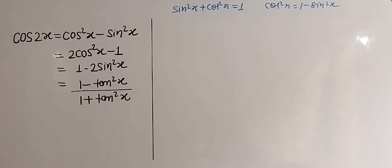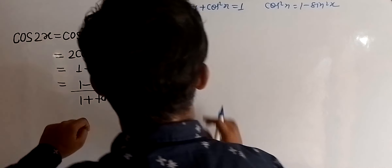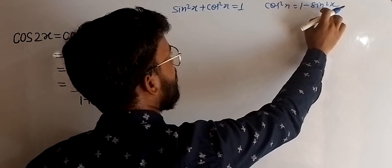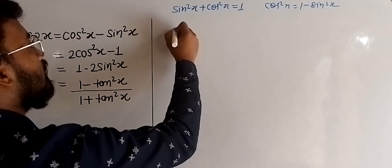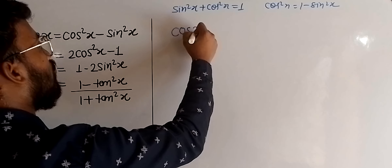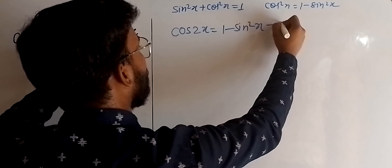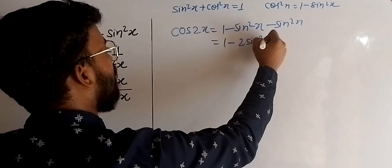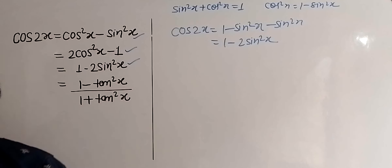Now let us remove cos²x from the first identity to get the third one. From sin²x + cos²x = 1, we get cos²x = 1 − sin²x. Putting this value in place of cos²x in the first equation, we get cos2x = (1 − sin²x) − sin²x, which becomes 1 − 2sin²x. In this way, we get the first, second, and third identities.